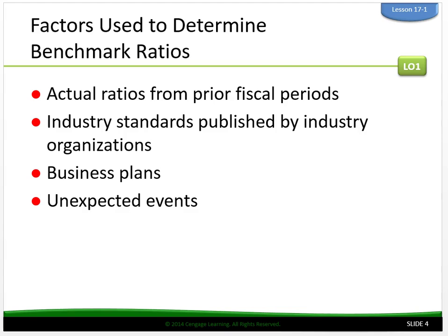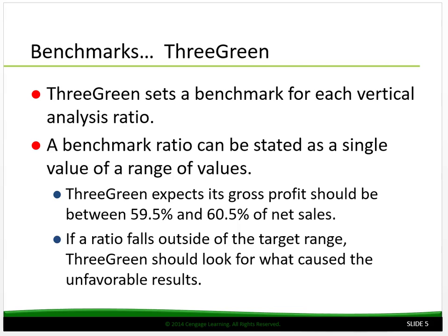For example, a hard freeze in Florida can result in higher food prices. Benchmarks for 3Green: 3Green sets a benchmark for each vertical analysis ratio. A benchmark ratio can be stated as a single value or a range of values. 3Green expects its gross profit should be between 59.5% and 60.5% of net sales. If a ratio falls outside of the target range, 3Green should look for what caused the unfavorable results.